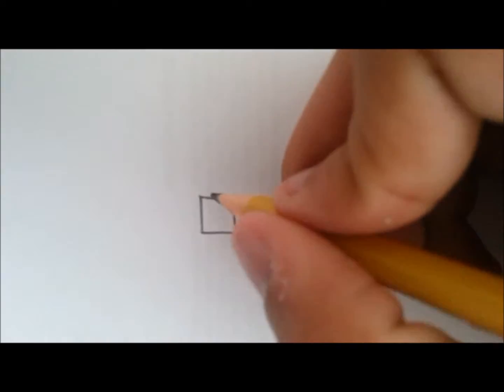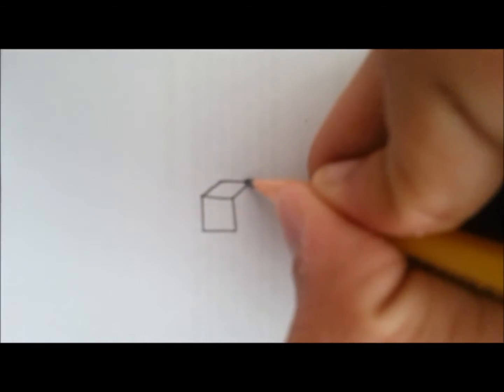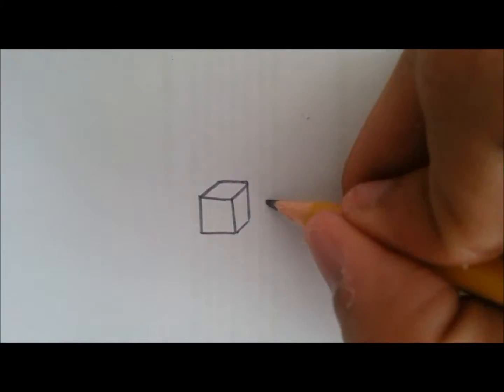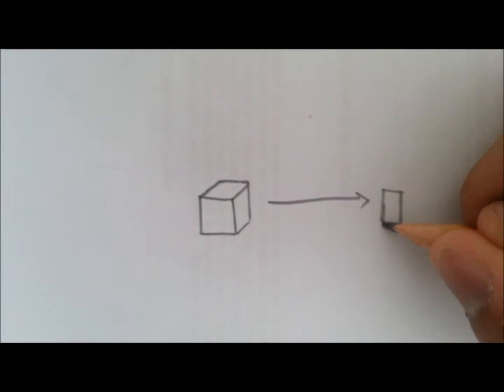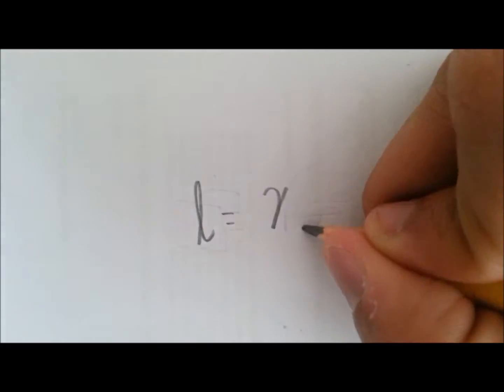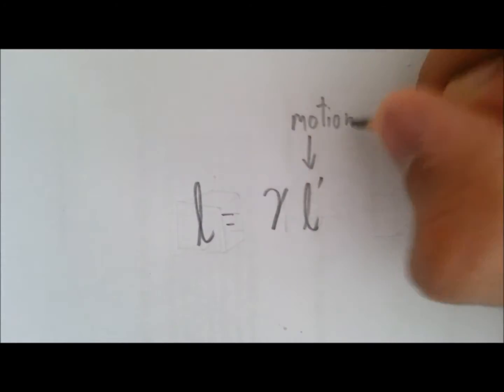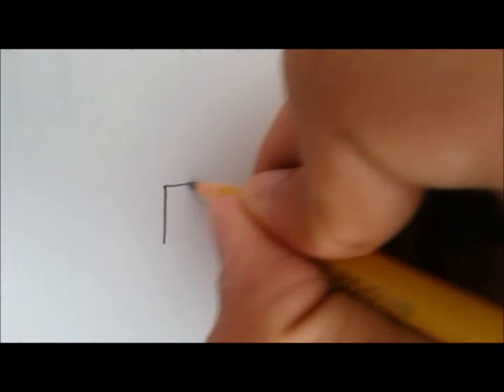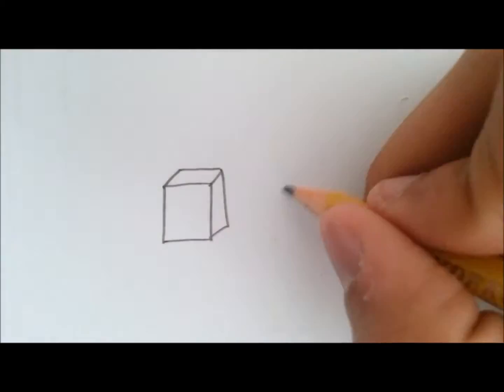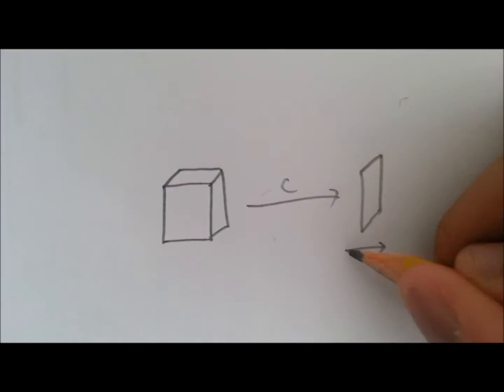This becomes even more strange when you realize that the length contracts only in the direction of the motion. So, a box moving in one direction will seem to get flattened as only one dimension gets shorter. The length of a moving object also decreases by the Lorentz factor. Once again, at the speed of light, the moving object seems to have a length of zero.